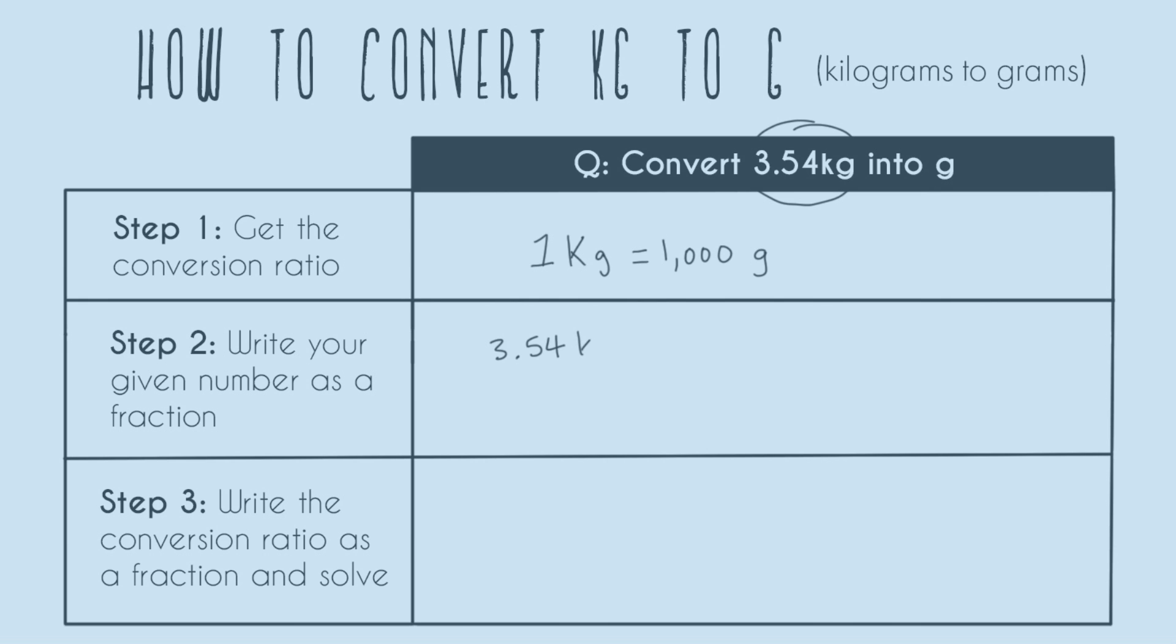So the units are kilograms and we're going to write it as a fraction. Obviously 3.54 isn't written like a fraction the way we see it, so we have to use our math knowledge that anything can be a fraction with a denominator of one if there's no denominator shown.